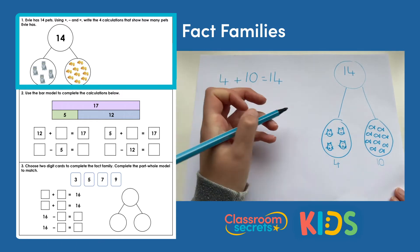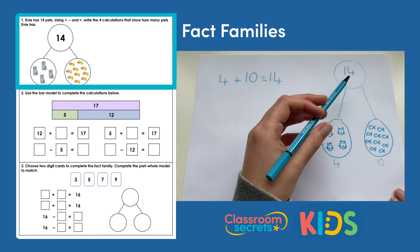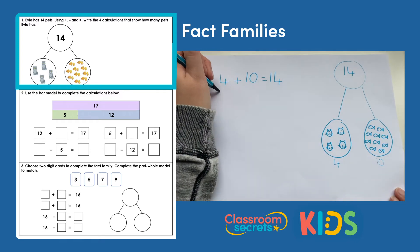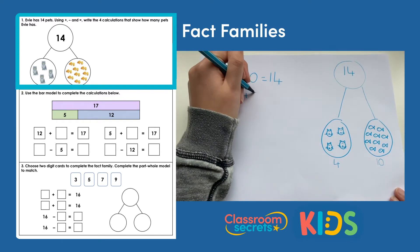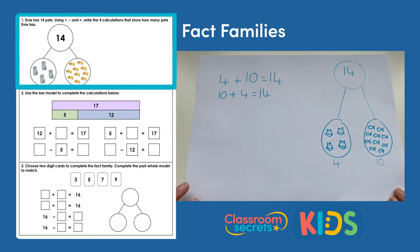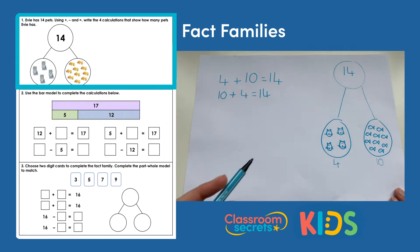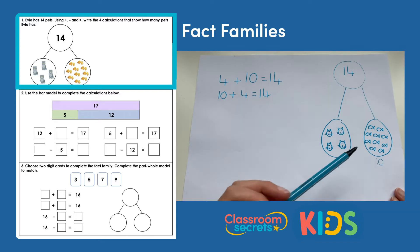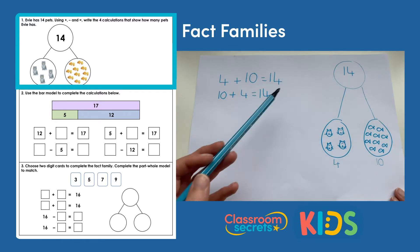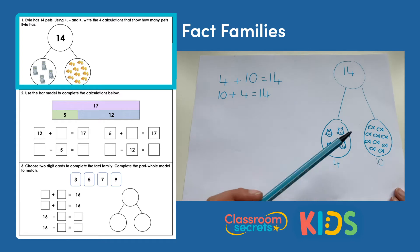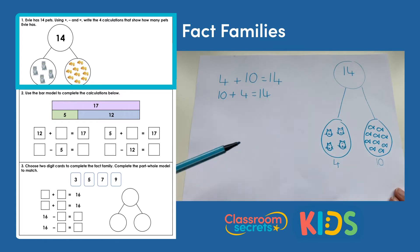Or we could have ten add four equals fourteen — it doesn't matter which way around our parts go, the whole will still be the same in an addition. For the subtracts, we'll start with the whole number which is 14. Whole take away part equals part, so we could do 14 take away 4 equals 10.